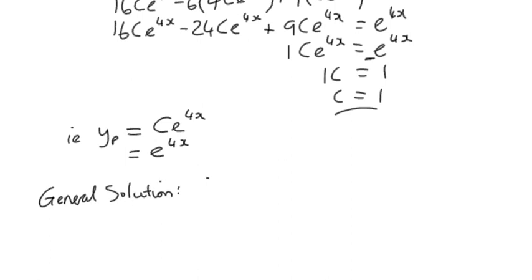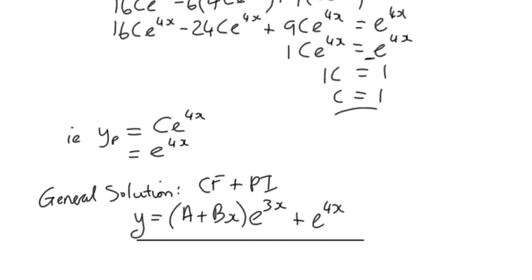The general solution is the complementary function plus the particular integral. So we've got y equals the complementary function (A + Bx)e^(3x) plus our particular integral e^(4x). And there we have the general solution for an exponential function.